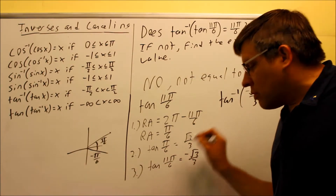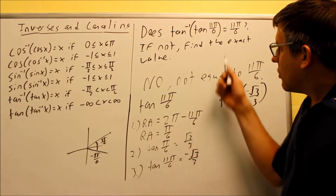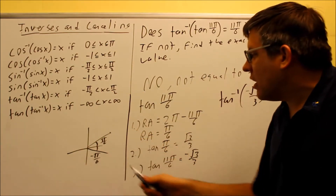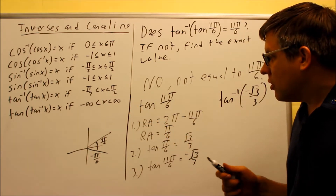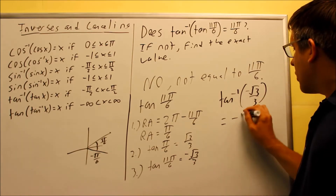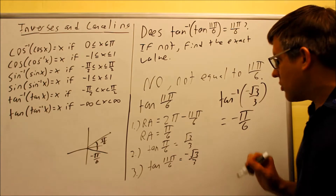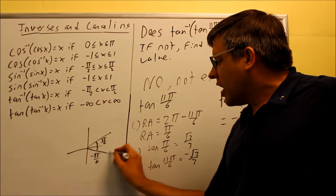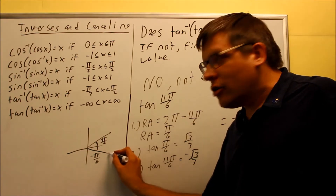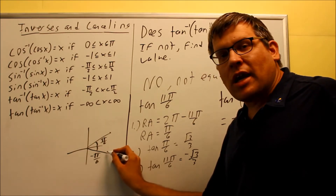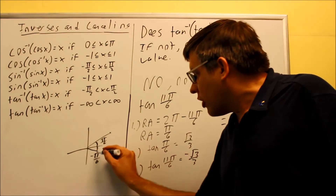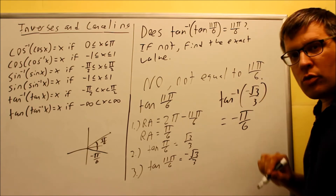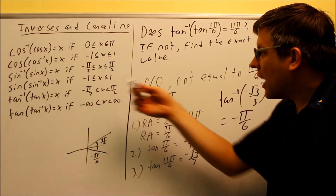Normally I would just put 11π/6 as the answer. However, the x value has to be between -π/2 and π/2 for this to work. Negative √3/3 corresponds to this angle going downward, which is negative π/6. So the answer is negative π/6. It's not equal to 11π/6 because 11π/6 is not between -π/2 and π/2.